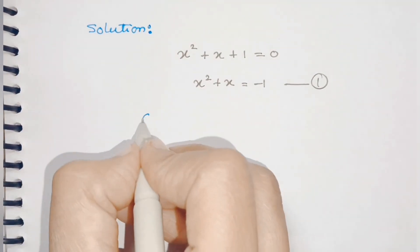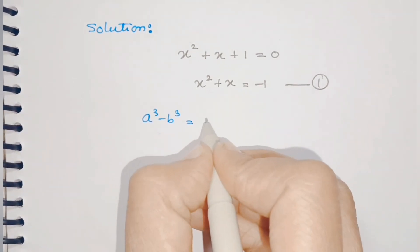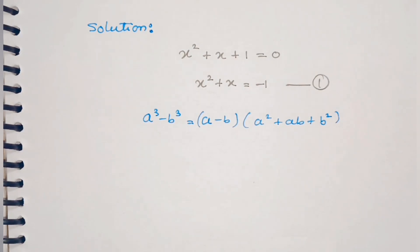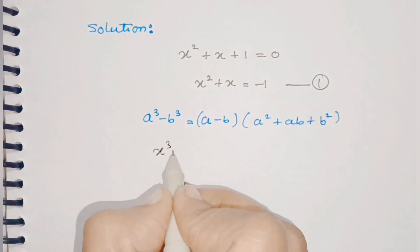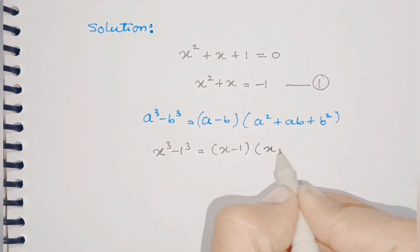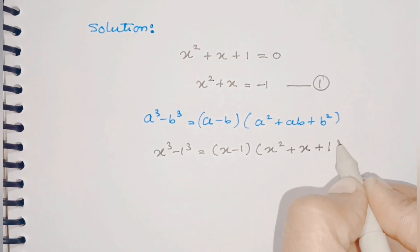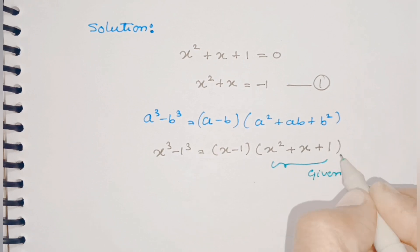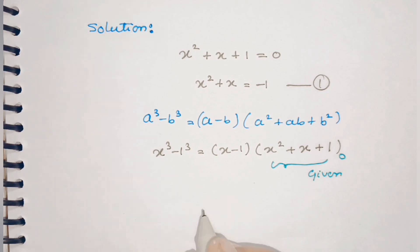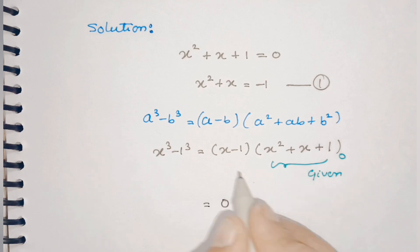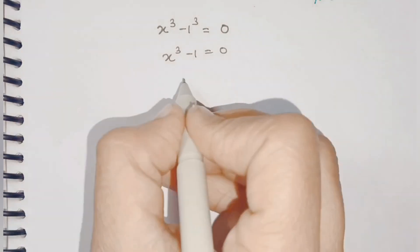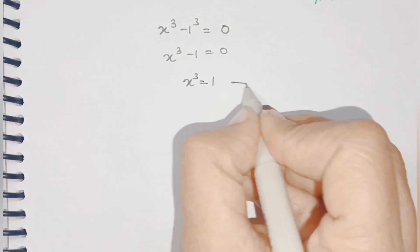Now we know the formula for a cubed minus b cubed, which is (a minus b) into (a squared plus ab plus b squared). Using this formula we calculate x cubed minus 1 cubed equals (x minus 1) into (x squared plus x plus 1). We already know x squared plus x plus 1 equals 0, and 0 into any number is 0, so x cubed minus 1 equals 0, which implies x cubed equals 1. We give this as equation number 2.